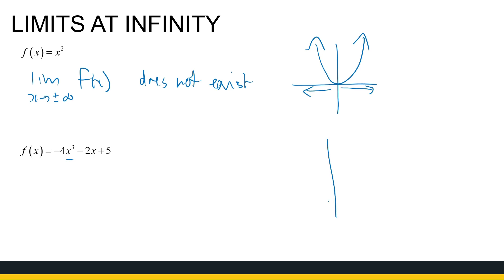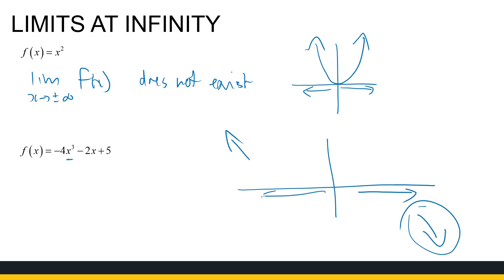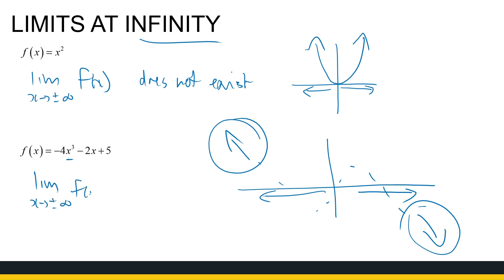What about the cubic function? We know how cubic functions behave — it's going to go in opposite directions. As x goes to positive infinity, the function goes to negative infinity, and as x goes to negative infinity, the function goes to positive infinity. I'm not interested in what happens in the middle, because I'm looking at the limits at infinity. So this limit does not exist, because the function goes towards positive and negative infinity. That's what we find with all polynomials — their limits at infinity do not exist.